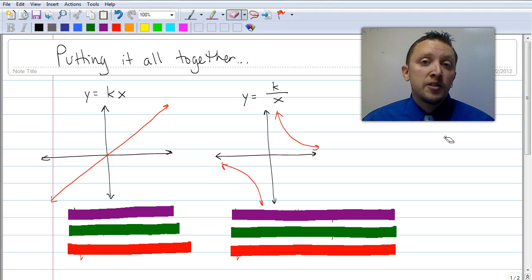We've talked about equations in the form y equals k times x. We've talked about graphs in the form y equals k times x squared. And more recently we talked about graphs in the form of y equals k divided by x and k divided by x squared.